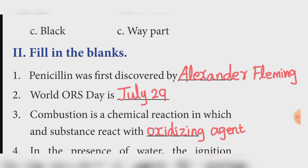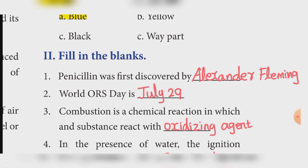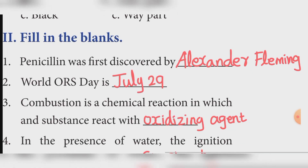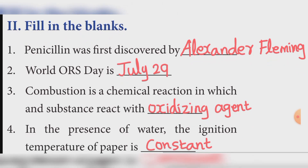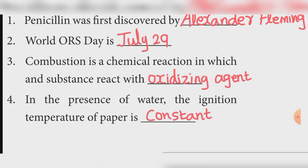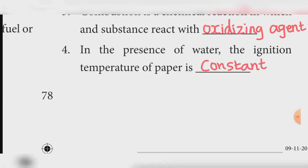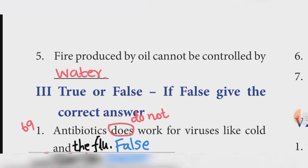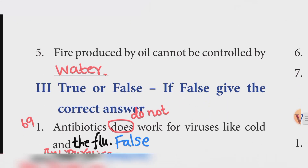Second one: World ORS Day is — Answer: July 29. Third one: combustion is a chemical reaction in which a substance reacts with an oxidizing agent. Fourth one: in the presence of water, the ignition temperature of paper is constant. Fifth one: fire produced by oil cannot be controlled by — Answer: water.